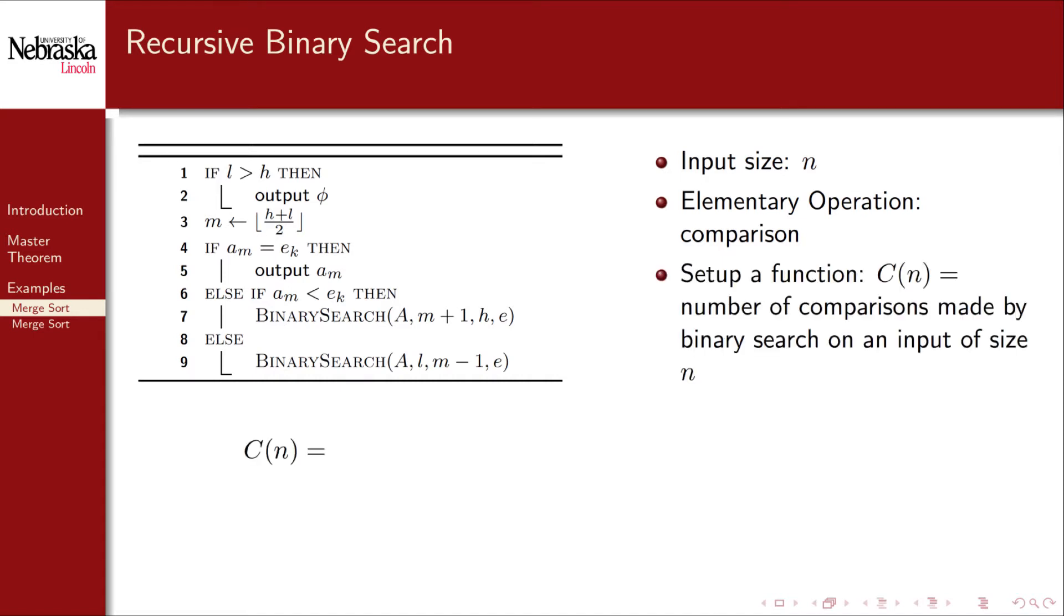As with the Fibonacci example, we need to set up a resource function. Let C sub n be the number of comparisons made by binary search on an input collection or array of size n. In the base case, the array is empty. We don't make any comparisons. Otherwise, we have a non-recursive cost of one comparison on line 4.